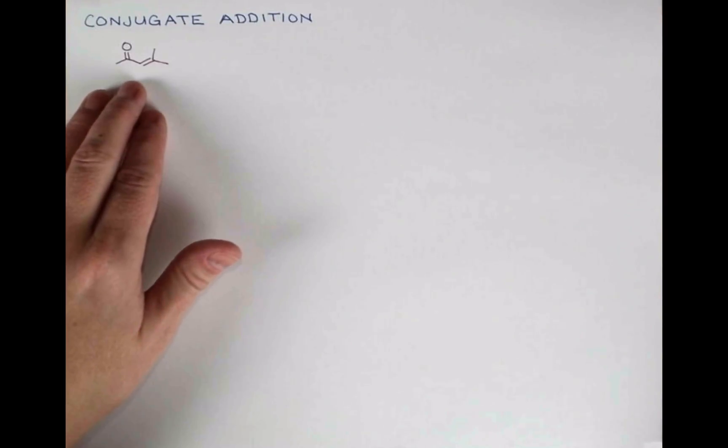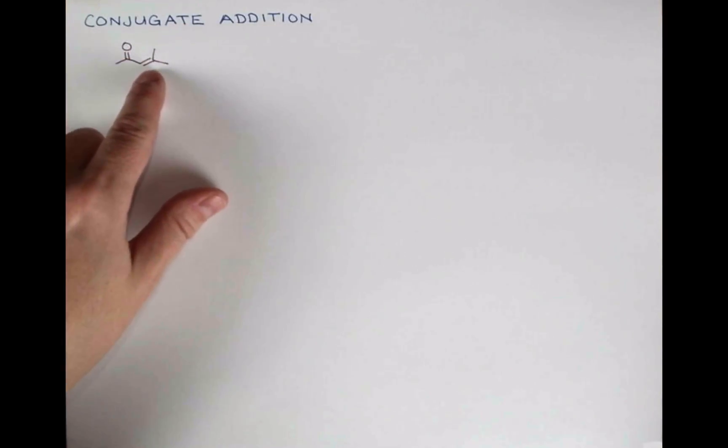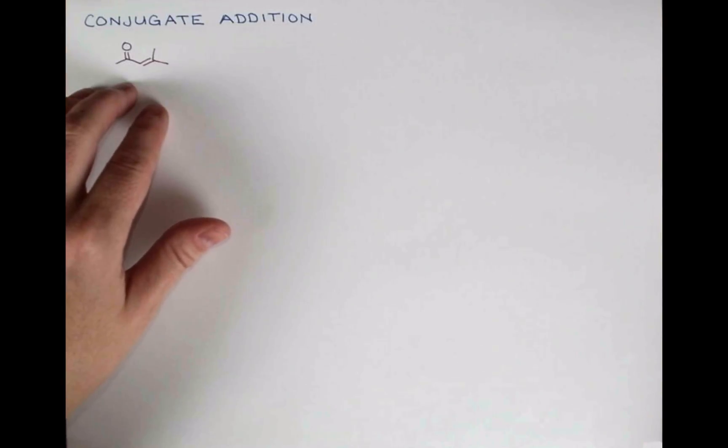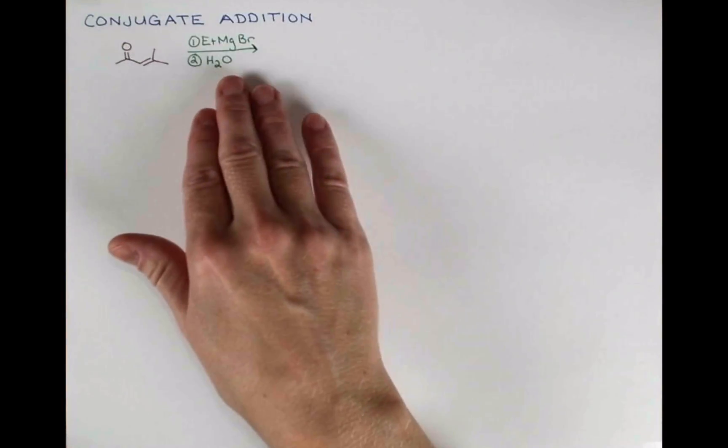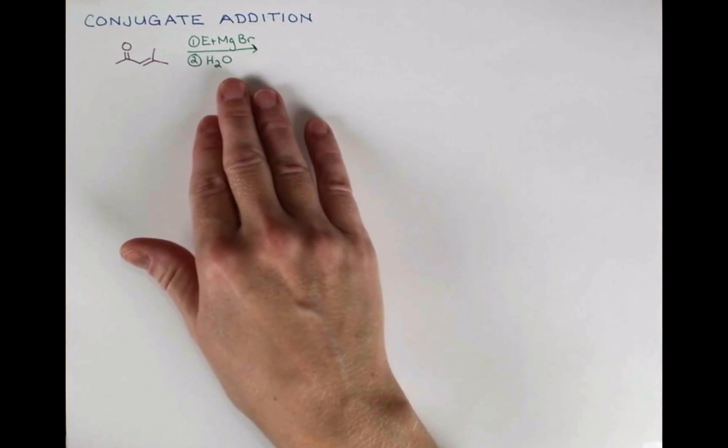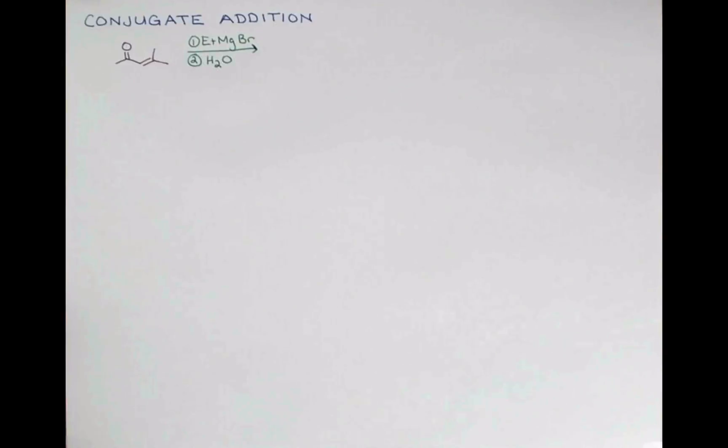This molecule is an enone. We have a carbonyl in conjugation with an alkene in the same molecule. When we treat this with a Grignard reagent and treat it with water in a second step, we'll get addition to the carbonyl of this compound.